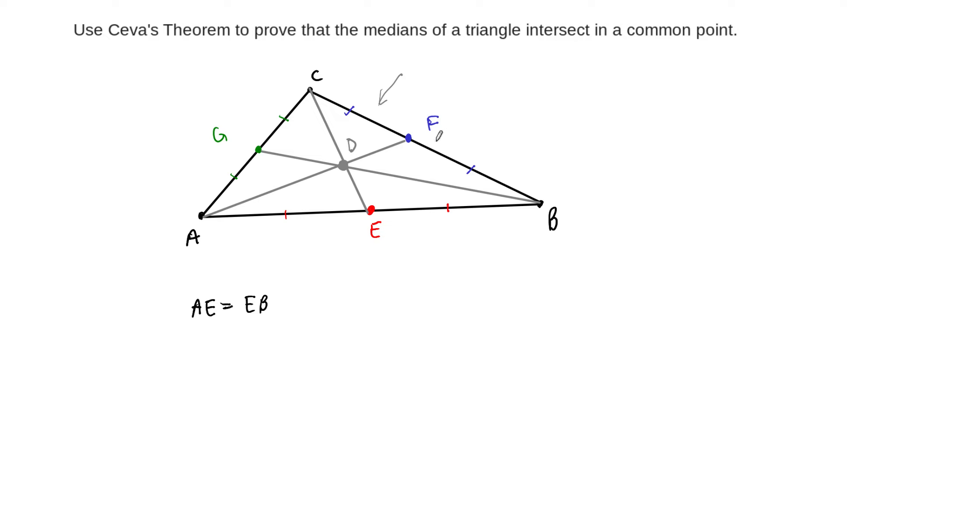And then what do we have? Well, the next one, we have BF is equal to FC, right? So these two are equal because of the median property, the midpoint property. And then we have CG is equal to GA.